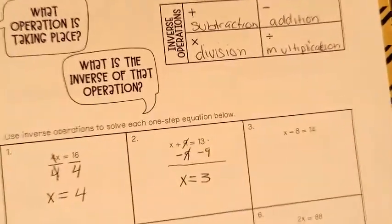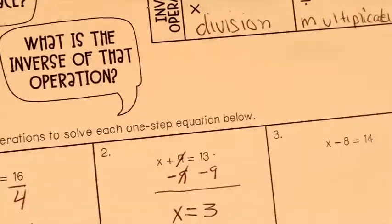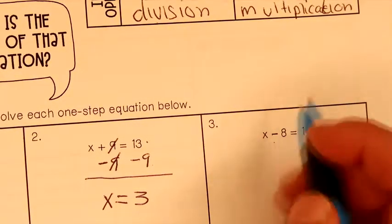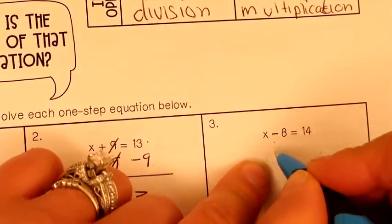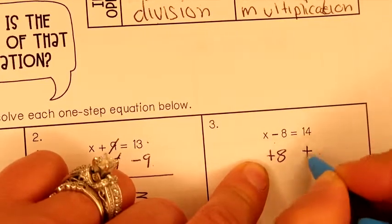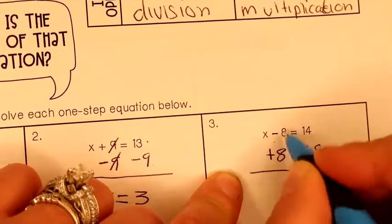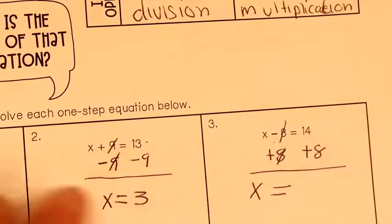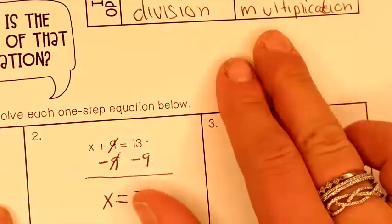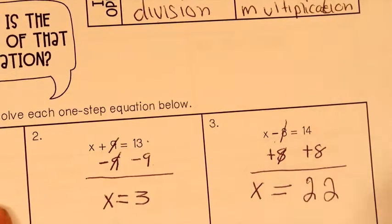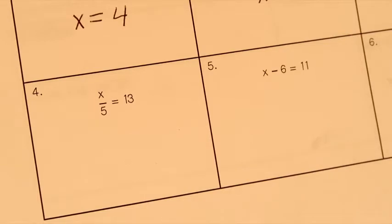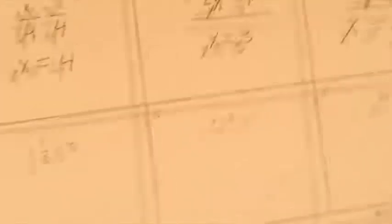So number 3, sorry, if it sounds like I'm a little stuffed up, it's because I am. Now remember, subtraction is going to be addition. So if we have a minus 8, we're going to plus 8 on this side, and plus 8 on this side. Now we have x alone. X equals 14 plus 8. 14, 15, 16, 17, 18, 19, 20, 21, 22. I don't know about you, I'm feeling 22. I'm going to probably sing that song every single time we get to an answer that's 22.